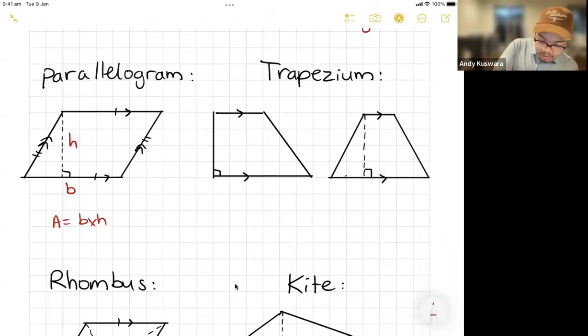For a trapezium, you're going to have a height. You're also going to have a and b, which are your two parallel lines. Okay. The reason I've drawn two trapeziums is they're both trapeziums because they only have one pair of parallel lines.